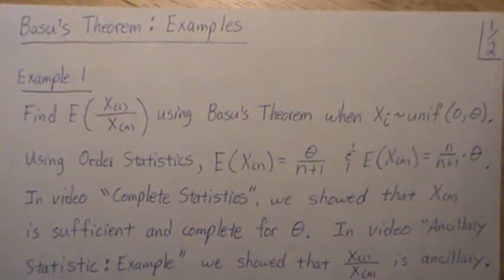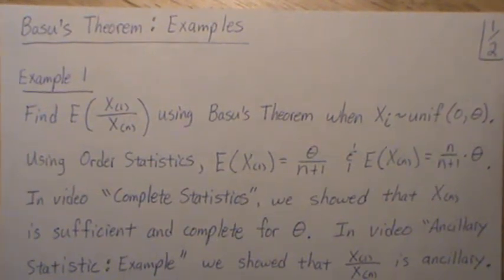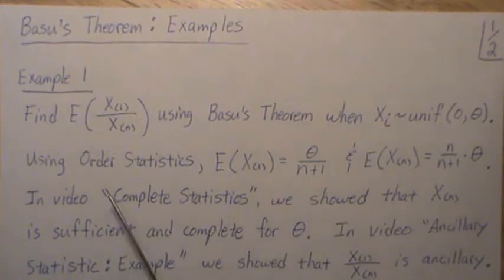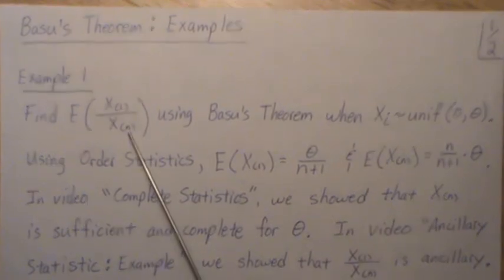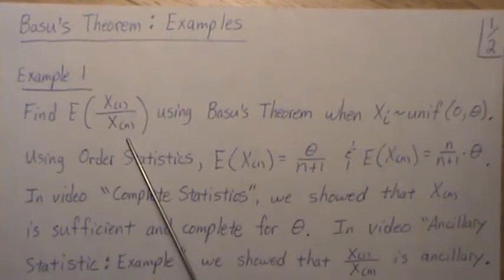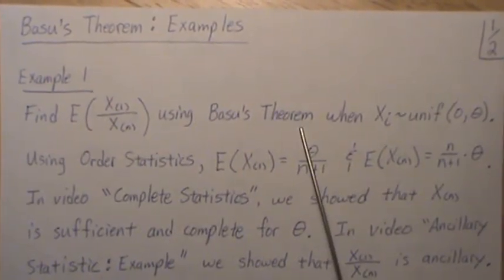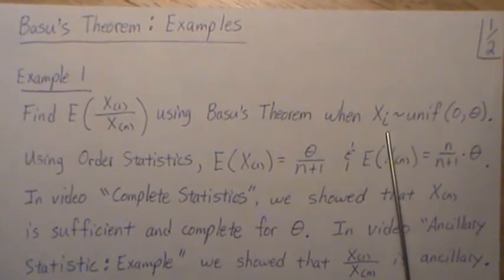This is the next video on a playlist that I'm calling parameter estimation and we're going to look at Basu's theorem through some examples. Example one: we're going to find the expected value of the minimum order statistic divided by the maximum order statistic using Basu's theorem when Xi is uniform zero theta.